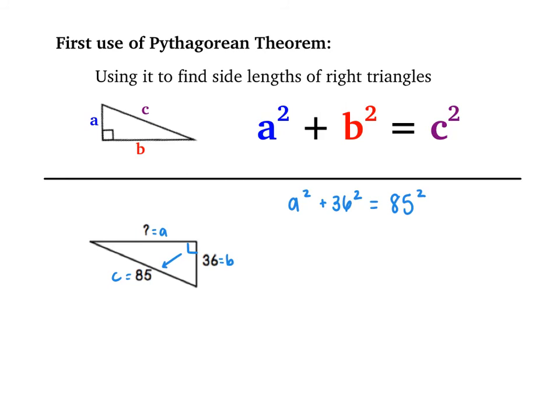First, I'm going to square both the values that I do have. A squared I have to leave in that format for now, but 36 squared equals 1,296, and 85 squared equals 7,225. At this point I can't square root both sides because I don't have a squared by itself. So I'm going to subtract 1,296 from each side.